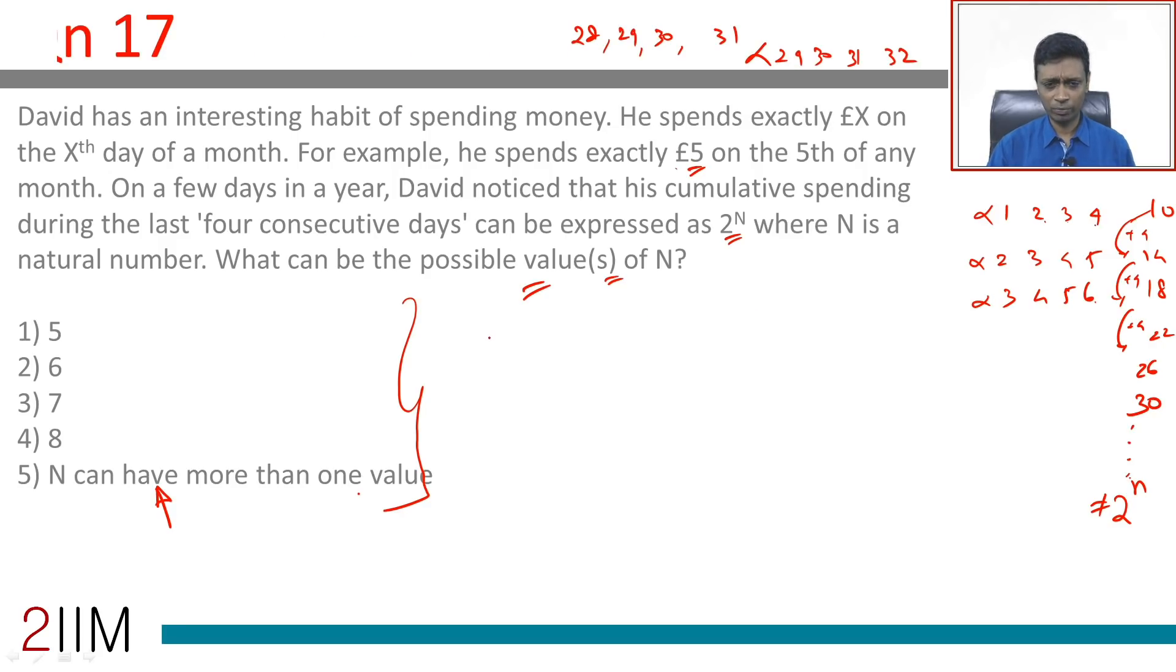A month can have 30 days or 31 or 28 or 29. For a 30-day month, we could be dealing with 28, 29, 30, 1 or 29, 30, 31, 1 or 29, 30, 1, 2 or 30, 1, 2, 3. We could have just 1, or 1 and 2, or 1, 2, and 3.